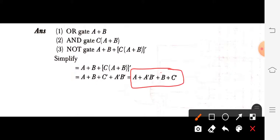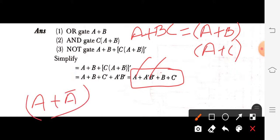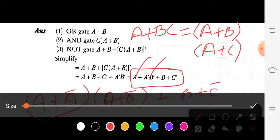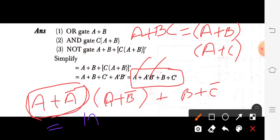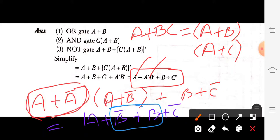One more mistake is there in this question — they have stopped at this point, but we can further solve it. In the first and second terms, apply the distributive law, which says A + BC = (A + B)(A + C). So applying it here gives: (A + Ā)(A + B̄) + B + C̄. Now A + Ā is 1, and 1·(A + B̄) gives A + B̄.